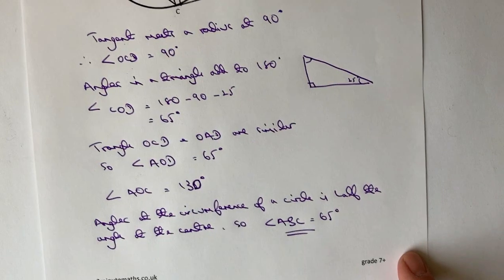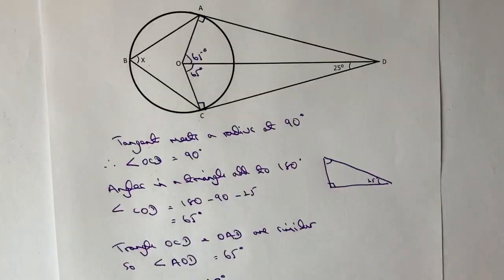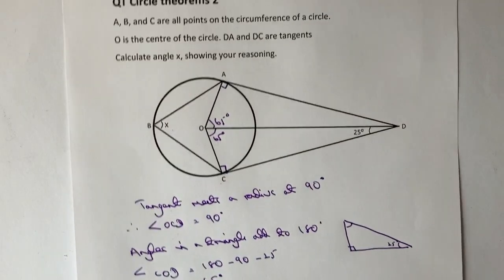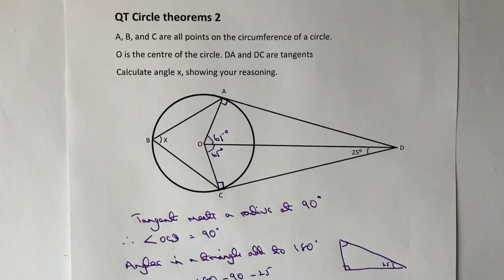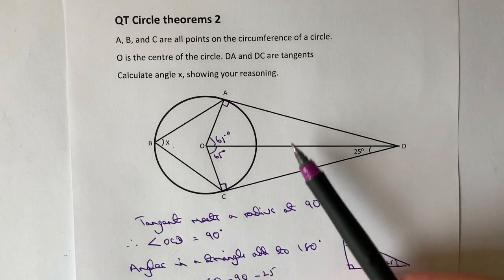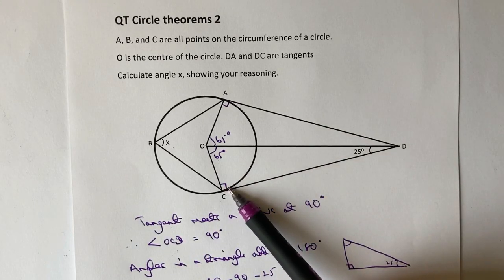Okay, and that would be the answer to this particular question, so quite a little bit of work, but once you kind of get used to breaking it down into bite-sized pieces, and also recognizing that we've got two congruent triangles here, both of which have got tangents, therefore they meet at 90 degrees.